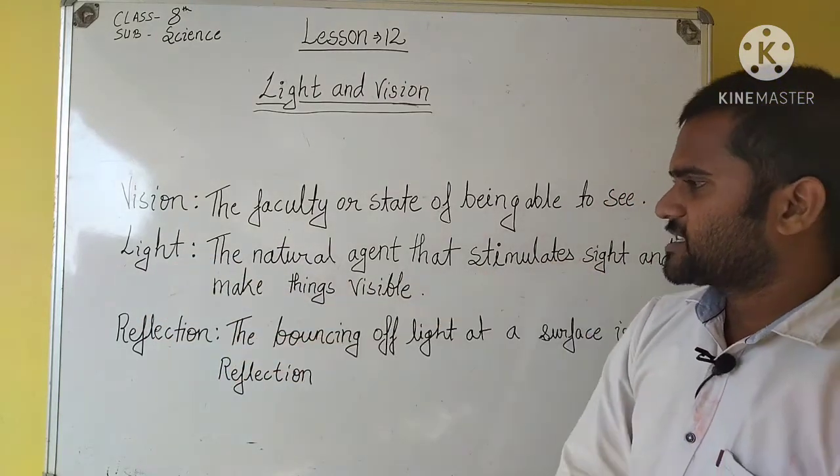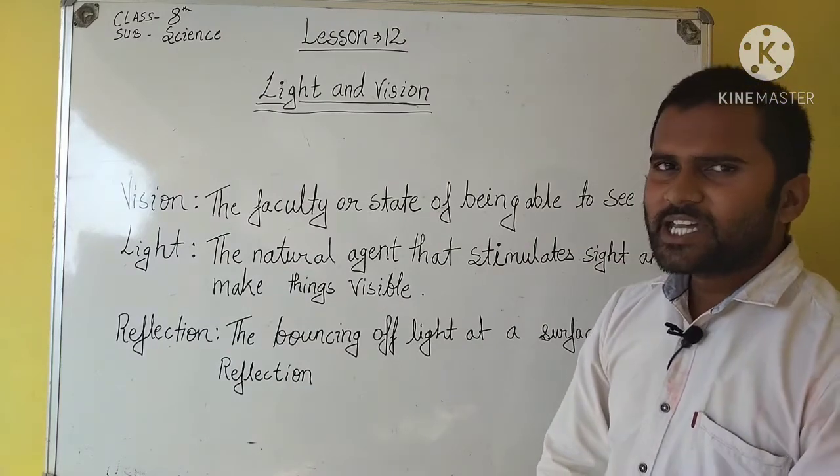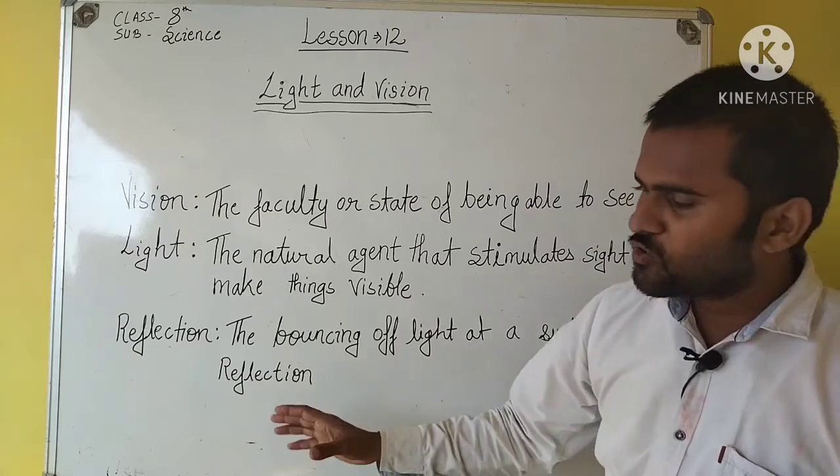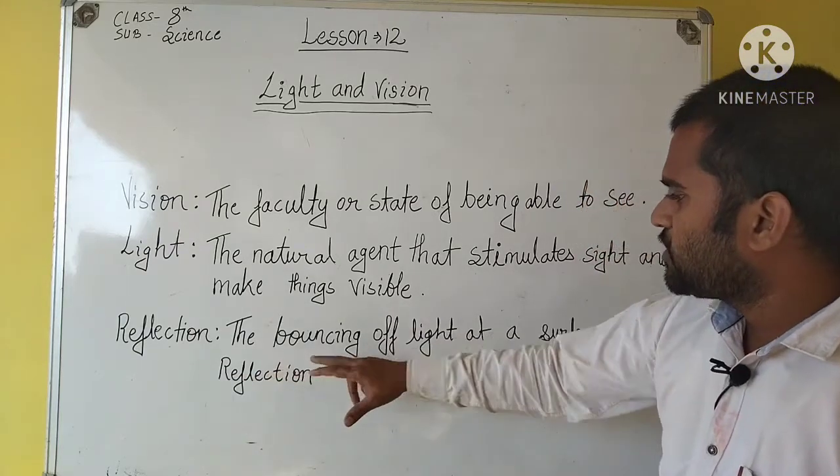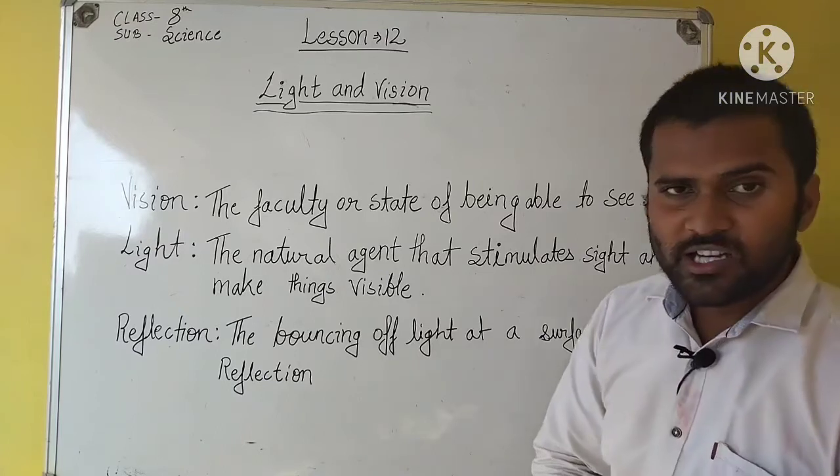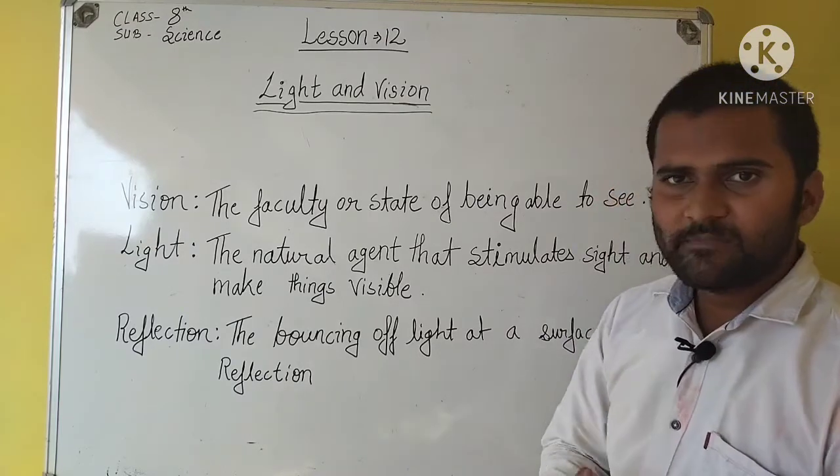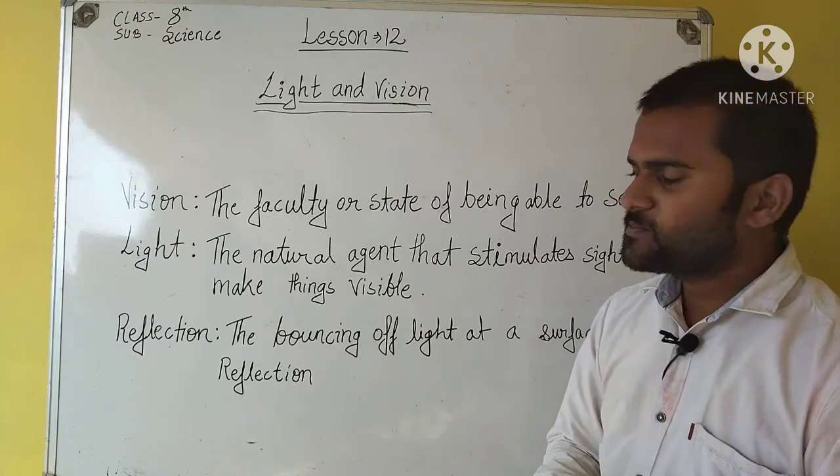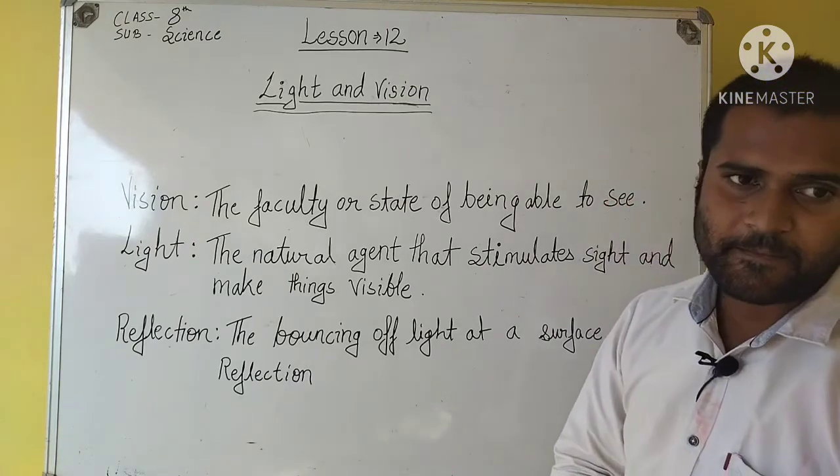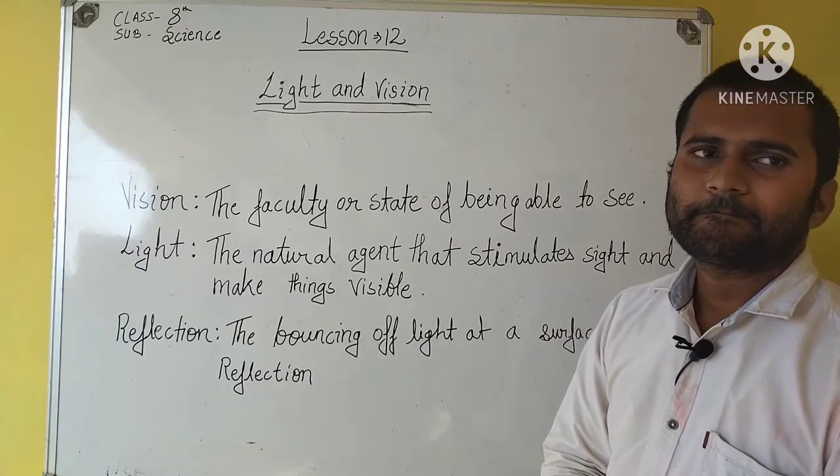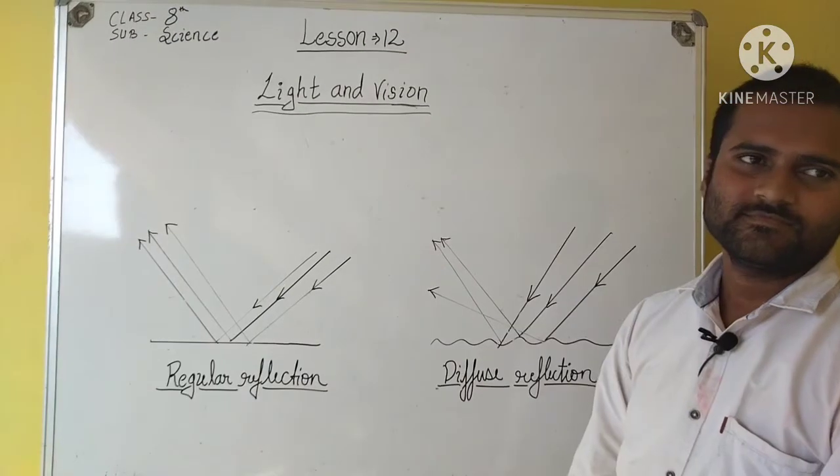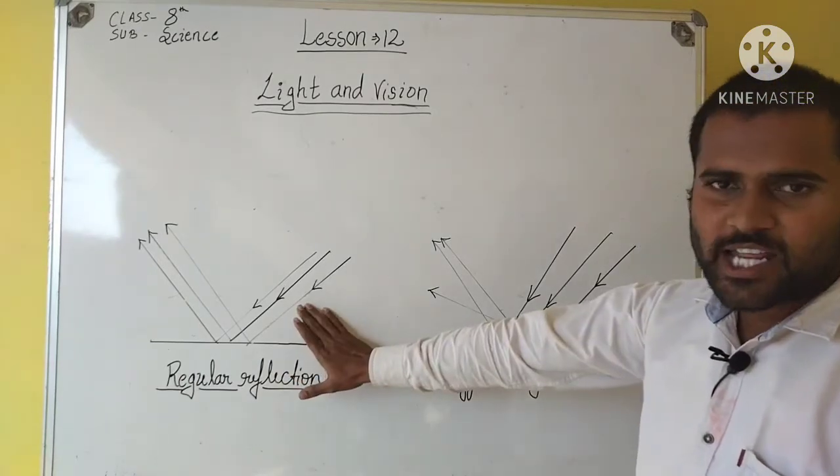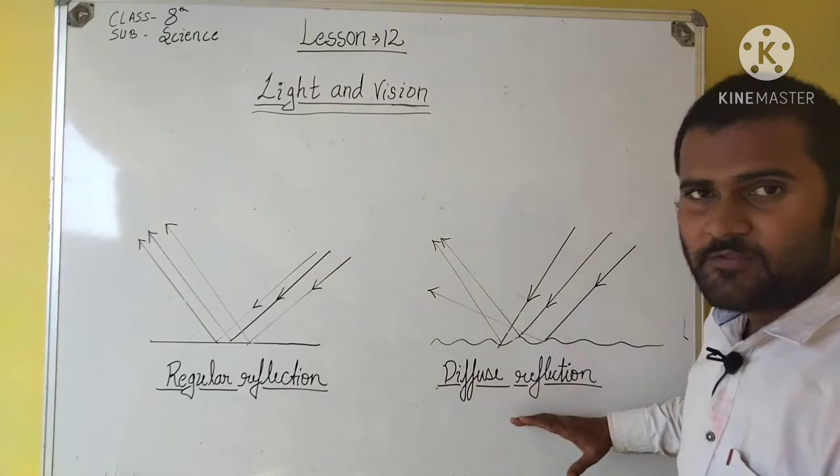And the next one is the reflection. The bouncing of light at a surface is called reflection. And the first one is the regular reflection and the second one is the diffuse reflection.